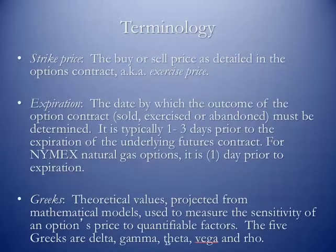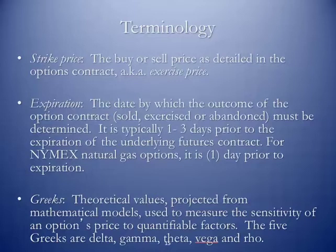The strike price is the buy or sell price as detailed in the options contract, also known as the exercise price. Expiration is the date by which the outcome of the options contract — whether it's sold, exercised, or abandoned — has to be determined. Options typically expire one to three days prior to the expiration of the underlying futures contract. For natural gas options, it's one day prior to the expiration of the underlying contract. Since the natural gas contract on NYMEX expires three working days prior to the first of the month, natural gas options expire four working days prior. The Greeks are theoretic values projected from mathematical models used to measure the sensitivity of an option's price to quantifiable factors — specifically delta, gamma, theta, vega, and rho.